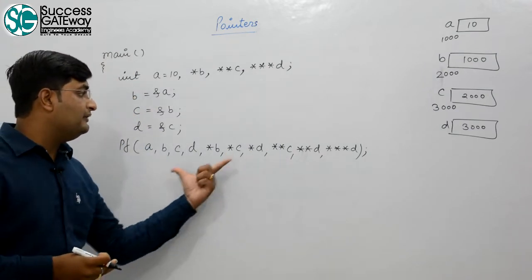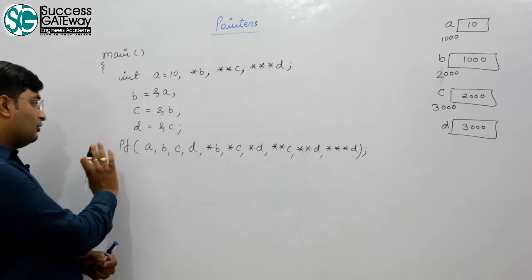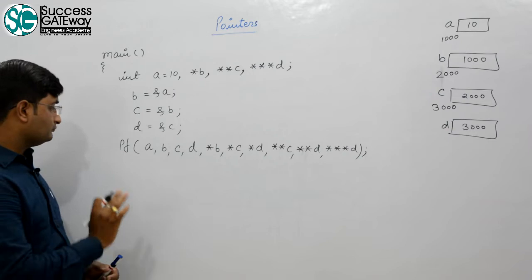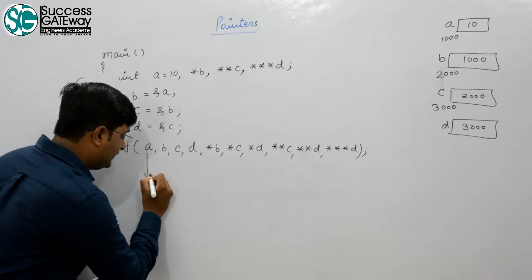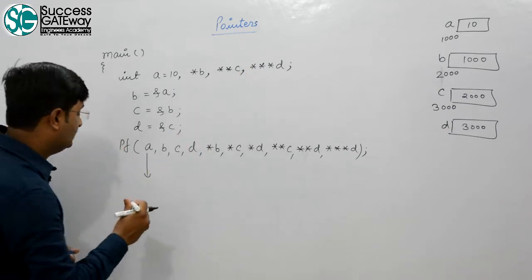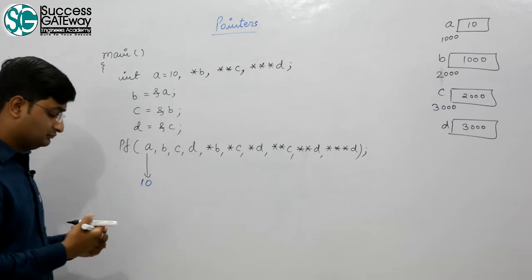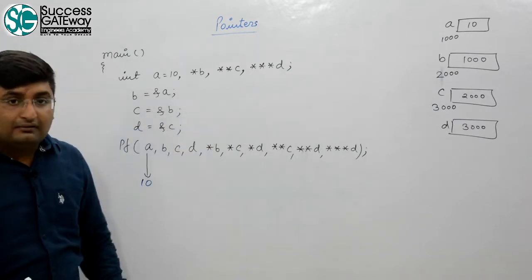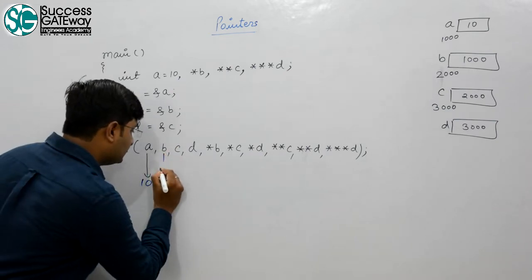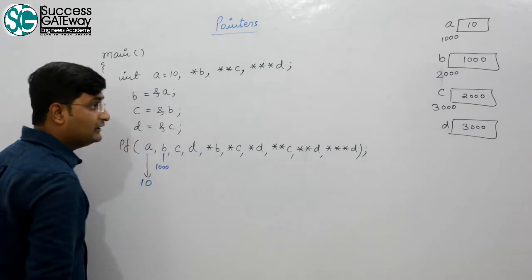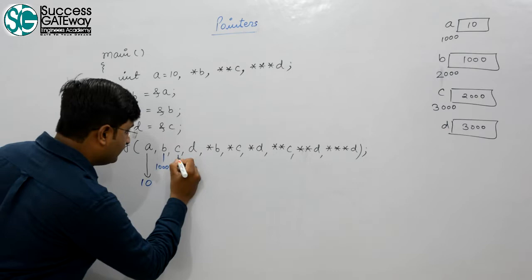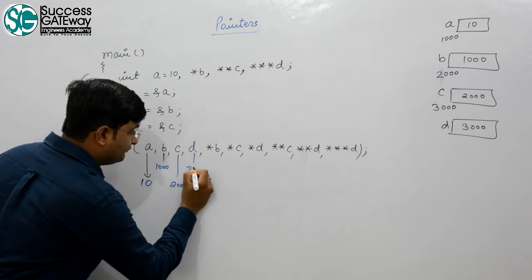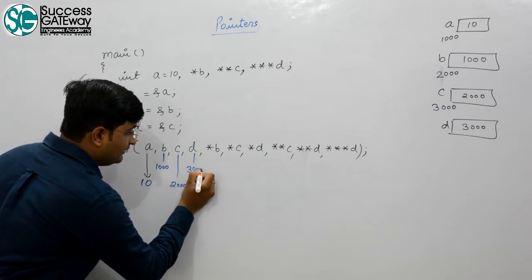What are the values printed? The value of a is 10. The value of b is 1000. The value of c is 2000. The value of d is 3000.